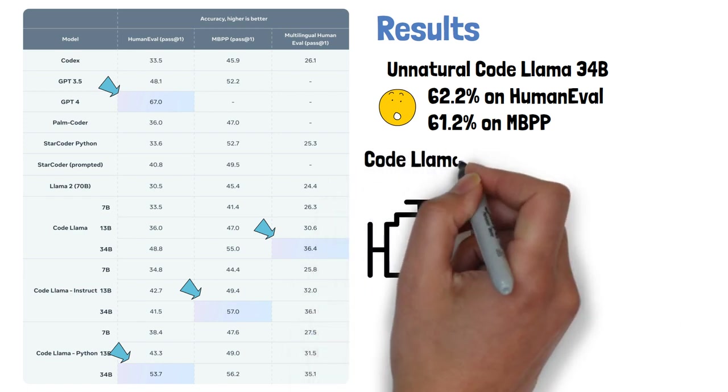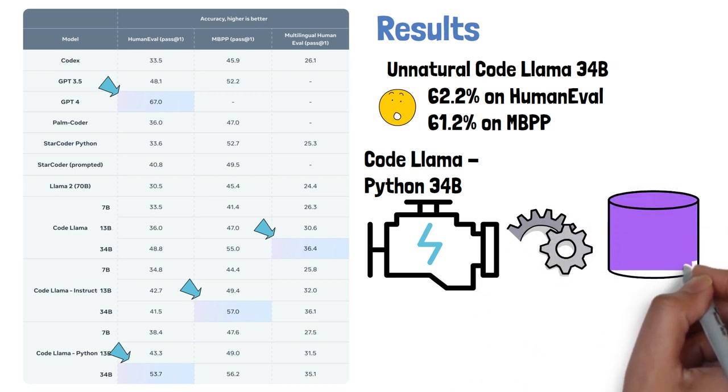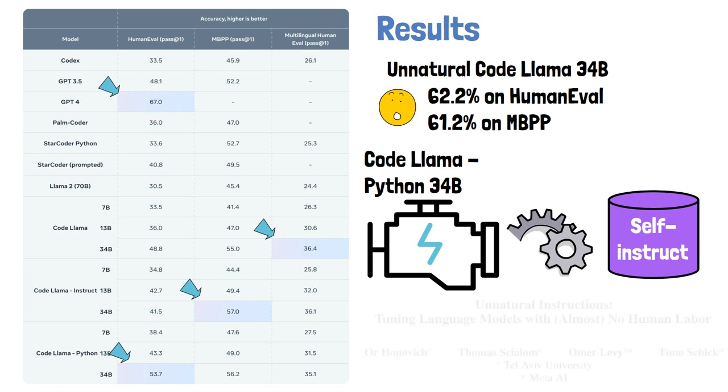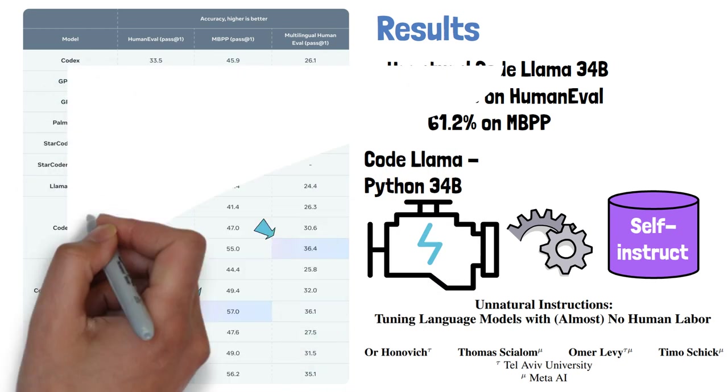So what is this model? This model is actually the CodeLama Python 34B model, which was fine-tuned over the self-instruct dataset which we covered earlier. This model was inspired by a research paper from Meta AI titled Unnatural Instructions: Tuning language models with almost no human labor.